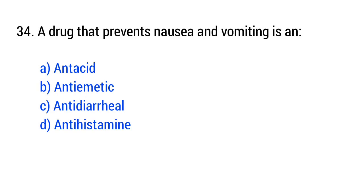Question 34. A drug that prevents nausea and vomiting is... The right answer is option B: Antiemetic.